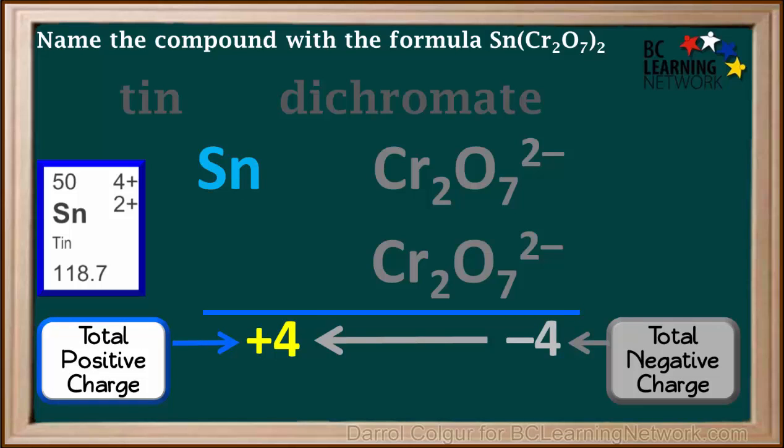The total positive charge is positive 4 and there is only one tin ion. So the charge on one tin ion must be positive 4. Therefore the Roman numeral we use is IV for 4.